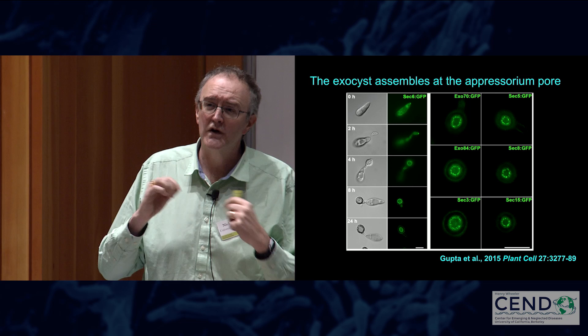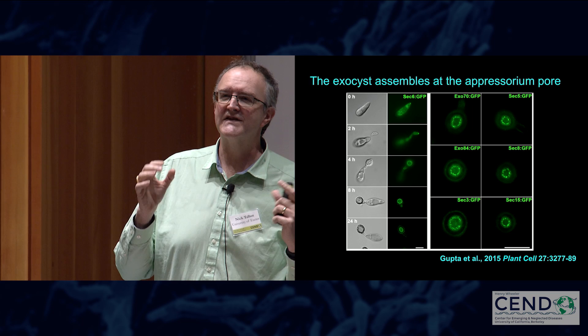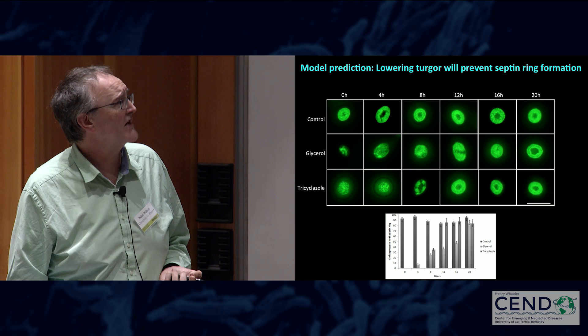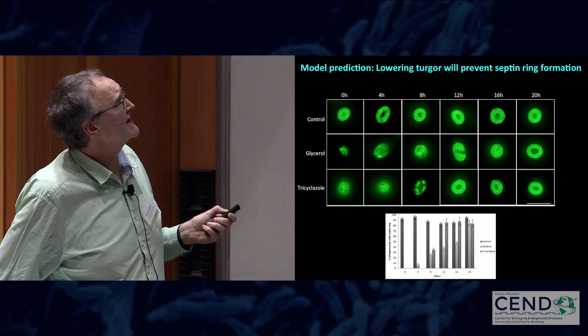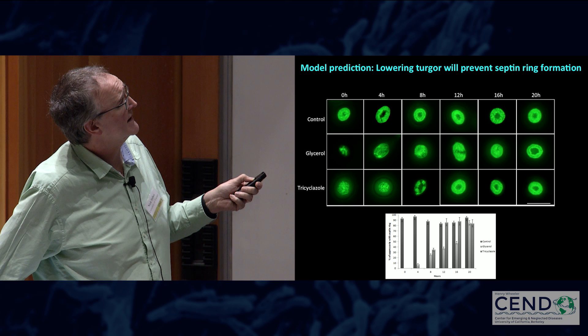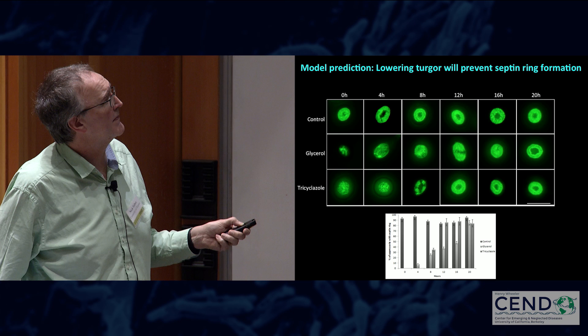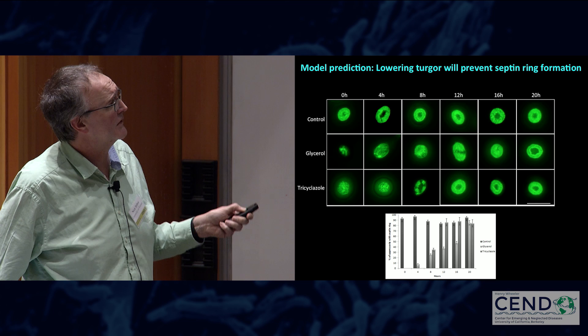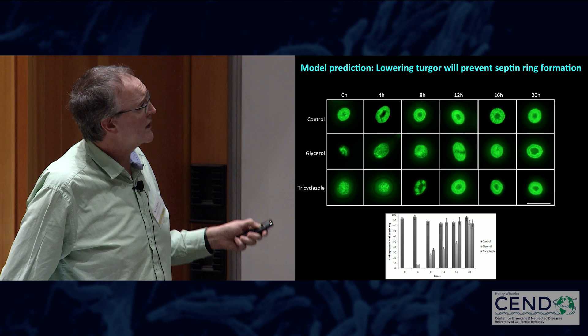So how does the appressorium perceive a signal to repolarize? One of the things occurring is pressure generation. We know that if we artificially lower pressure by incubating appressoria in hyperosmotic concentrations of glycerol, this affects the ability to make septin rings. In control cells, septin ring formation occurs normally during appressorium development. But if we add hyperosmotic glycerol, the septin ring doesn't form properly unless the glycerol is added at a very late stage where a commitment point has already been crossed. Inhibiting melanization, which also affects cell turgor, similarly affects septin ring organization.